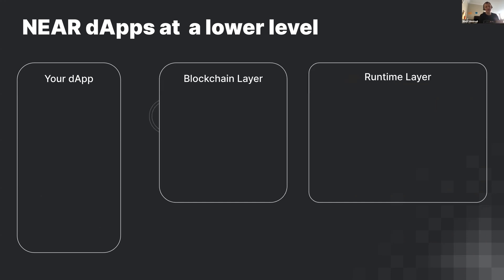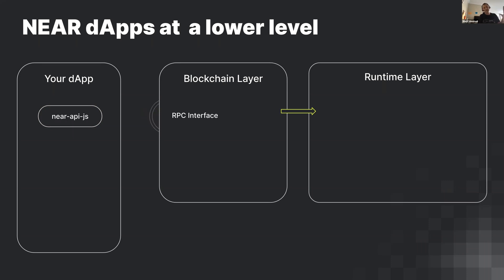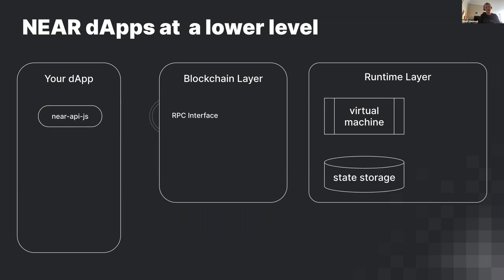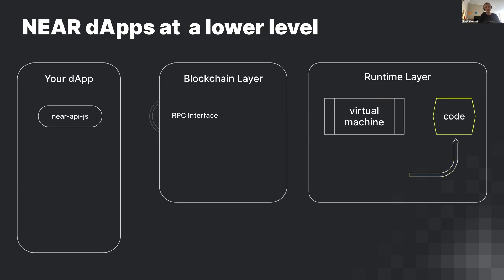You create an account on NEAR Protocol and then deploy your contract to that account. With Ethereum, the account is created for you automatically — not so with NEAR. You have to create the account yourself, and any account can have a contract on it. NEAR Protocol is actually two things: a blockchain layer and a runtime layer. From your application you use near-api-js to send requests to the RPC interface, and the blockchain layer catches those requests.